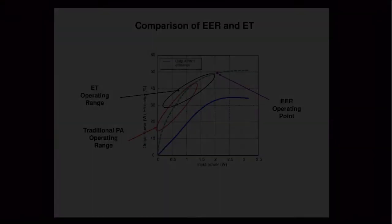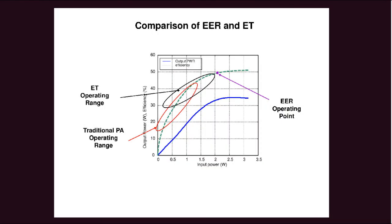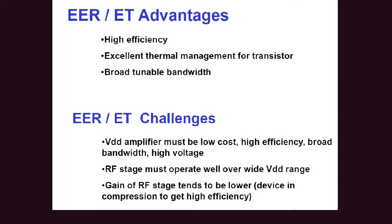EER gives very high efficiency. An important point is that EER efficiency is highest because the amplifier is operated in compression. This also means that EER requires a high input drive; for low input drive, EER is not that efficient. EER also gives very wide bandwidth because it operates on a phase signal. Another critical point is that time alignment between the amplitude and phase paths must be very carefully managed.